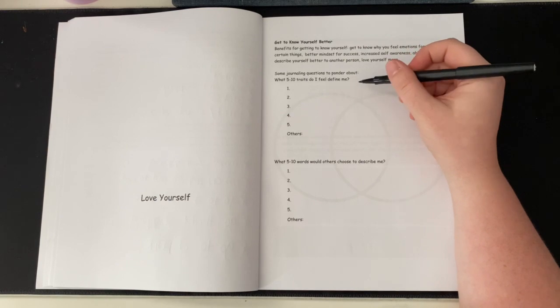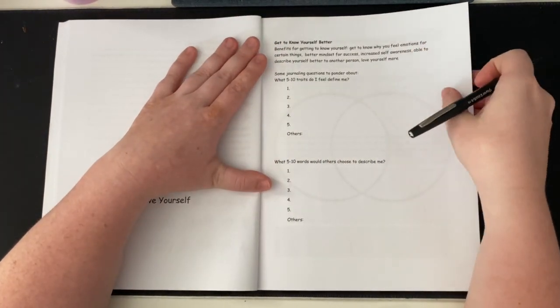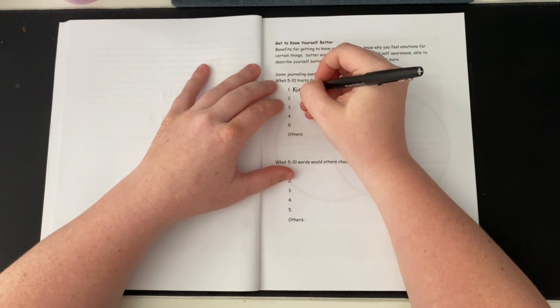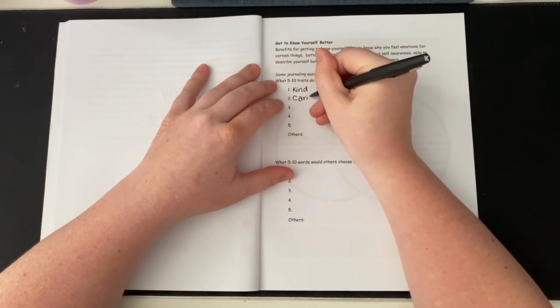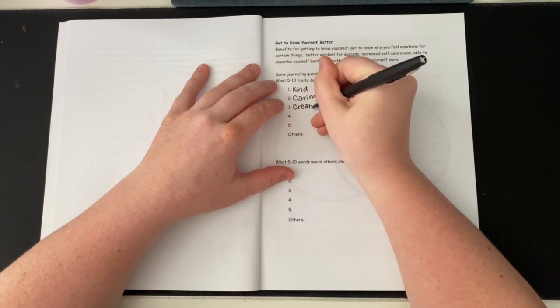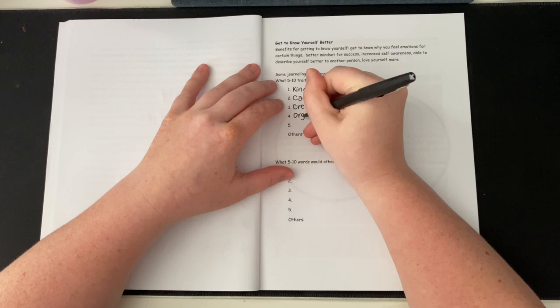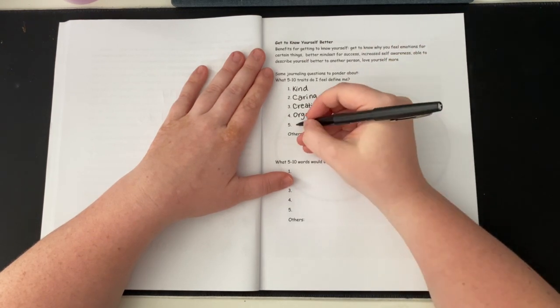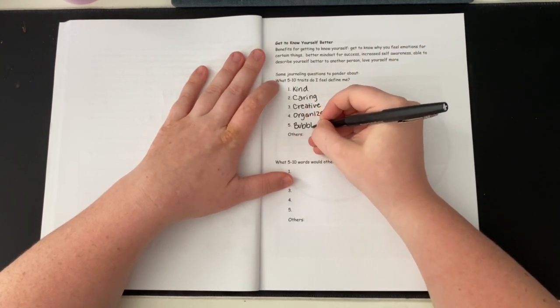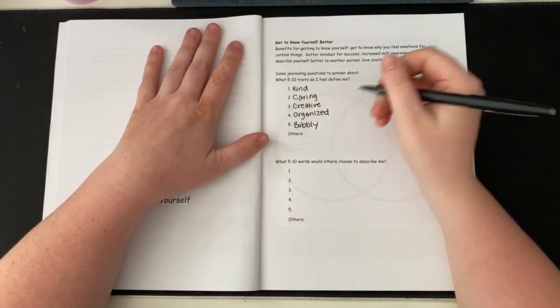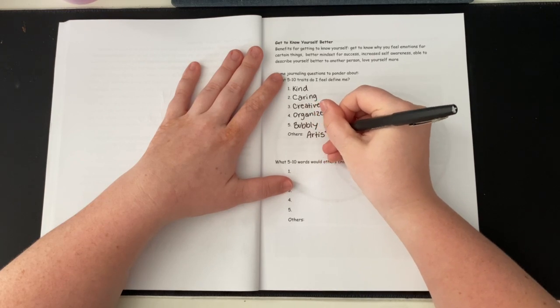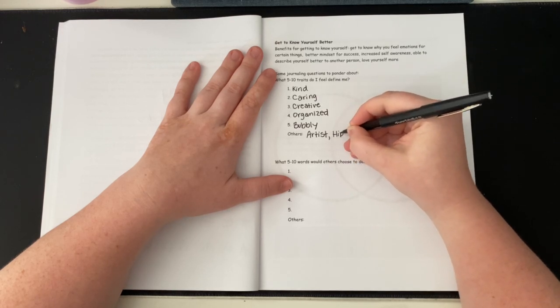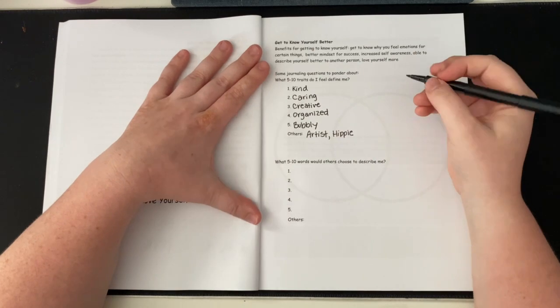Some journaling questions to ponder about. What five to ten traits do I feel define me? I am just very kind, caring, creative, organized. Also very, as my friends like to say, bubbly. I'm trying to think of some other things. You guys know the vibes. Write five to ten words.